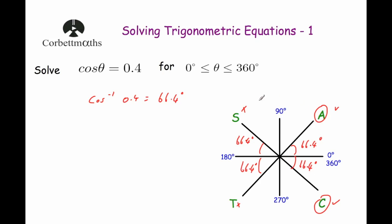Starting from zero and going anti-clockwise, our first angle is 66.4°, so θ = 66.4°. The angles in the second and third quadrants would give negative values, so we ignore those. Going all the way around to the fourth quadrant, that angle is 360° − 66.4° = 293.6°. So there are two angles between 0° and 360° where cos θ = 0.4: 66.4° and 293.6°.